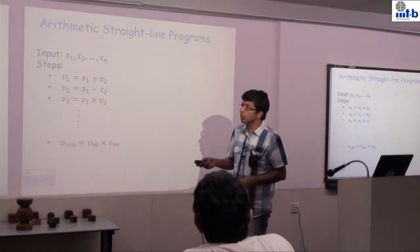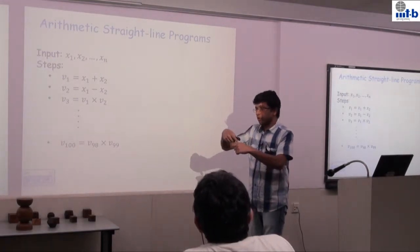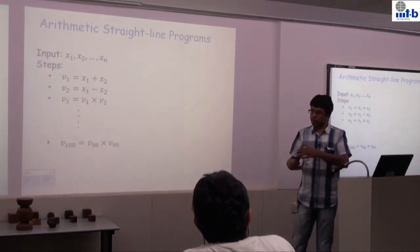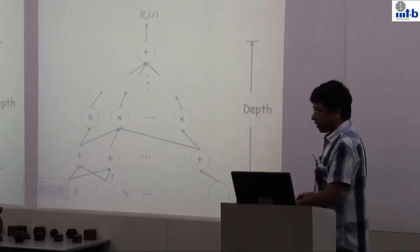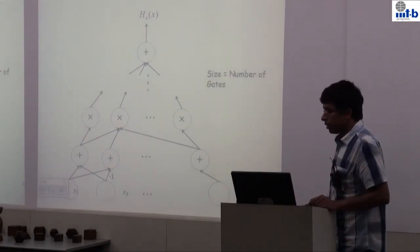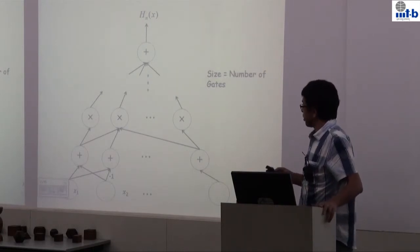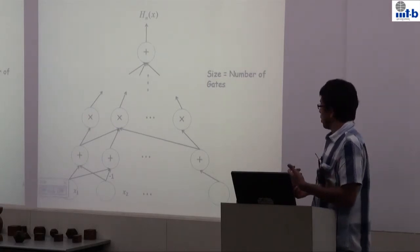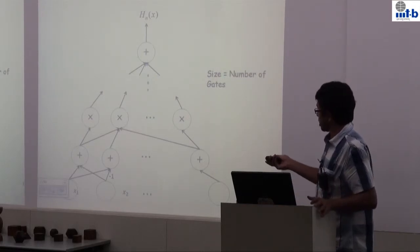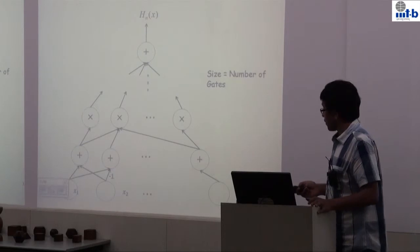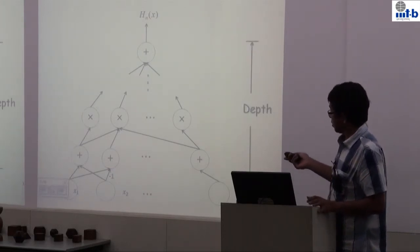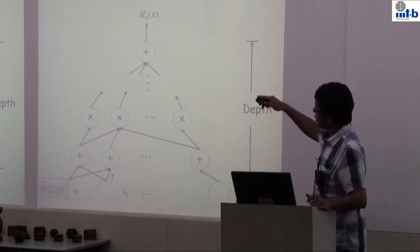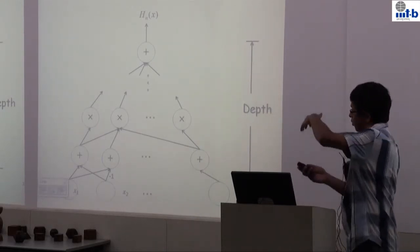We do not allow cyclic loops, so our computation is always well defined and it progresses. The quantities we are concerned with are the size of this program — the number of lines, or equivalently the number of nodes in the graph — and also the depth of the circuit, which is the length of a shortest path from an input node to the output node, that is, how tall the graph is.